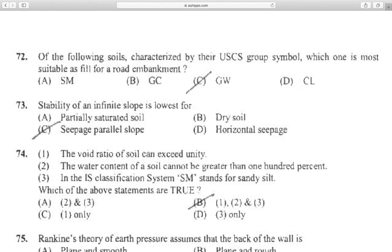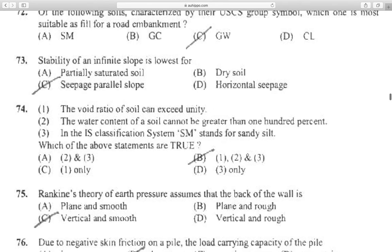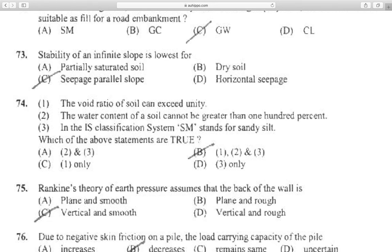Question 71: Of the following soils characterized by their USCS group symbol, which one is most suitable as fill for road embankment? GW. Question 72: Stability of an infinite slope is lowest for seepage parallel slope.